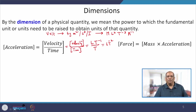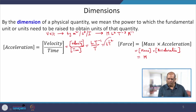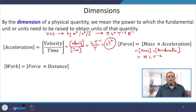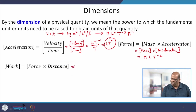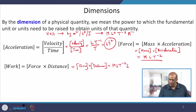Next, we have force. Force is mass times acceleration, so its dimension is M × L·T⁻² = M·L·T⁻². Then work done is force times distance, so the dimension of work is M·L·T⁻² × L = M·L²·T⁻².